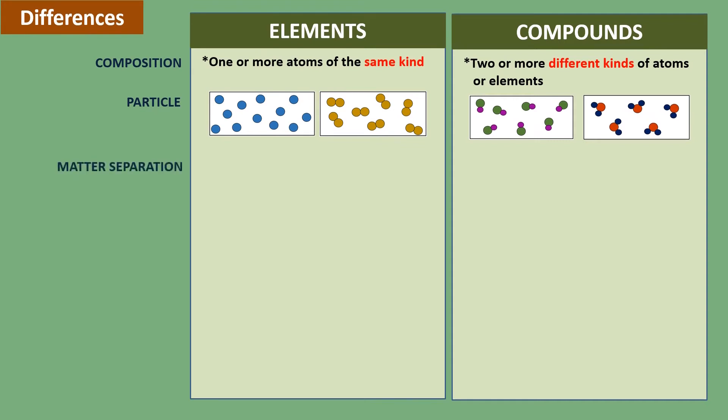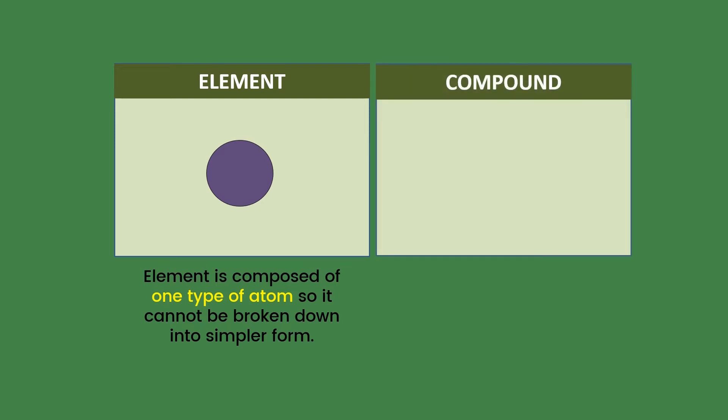Matter separation: elements cannot be divided or broken down into simpler form, while compounds can be divided or broken down into simpler substances by chemical process. An element is composed of one type of atom, so it cannot be broken down into simpler form. A compound consists of more than one element, so it can be broken down into its components.